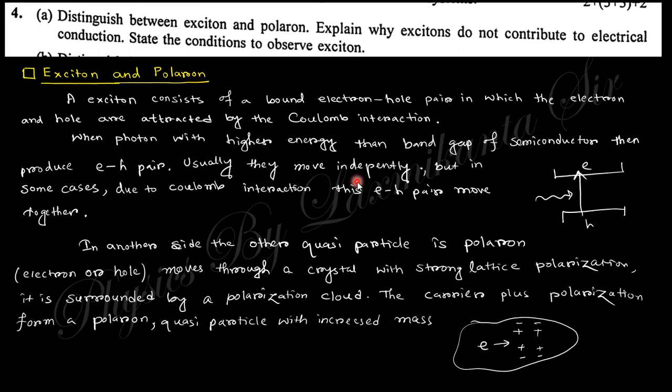When it moves through the material, polarization happens and this polarization traps this particle and changes some properties. The electron behaves differently from the free electron. That's why this is known as polaron, and this is a quasi-particle, meaning the actual particle differs from that.